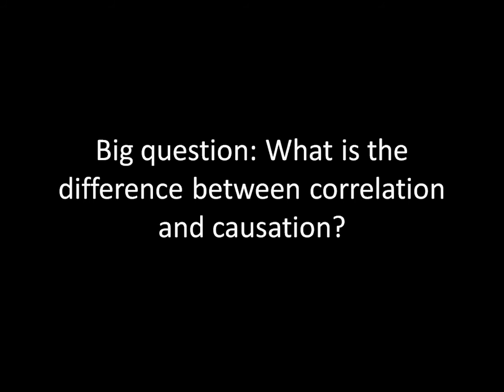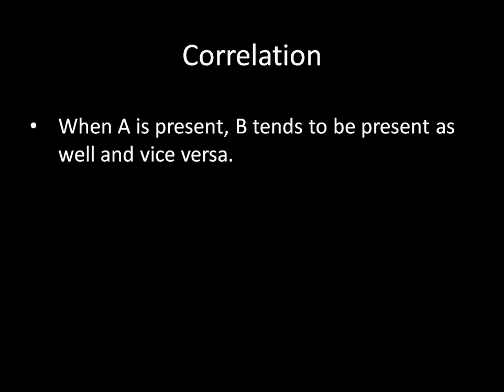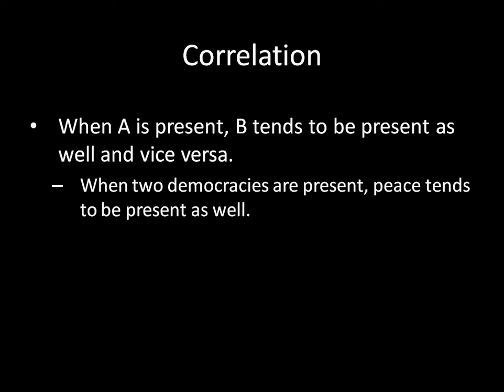When we say A is correlated with B, we need to not overthink this. It's very straightforward. All we're saying when A is correlated with B is that when A is present, B tends to be present as well, and when B is present, A tends to be present as well. Essentially, A and B go hand in hand. This has been important for the unit so far because we've talked about how when we have two democracies present, peace tends to be present as well. But notice that we haven't said anything about causation.